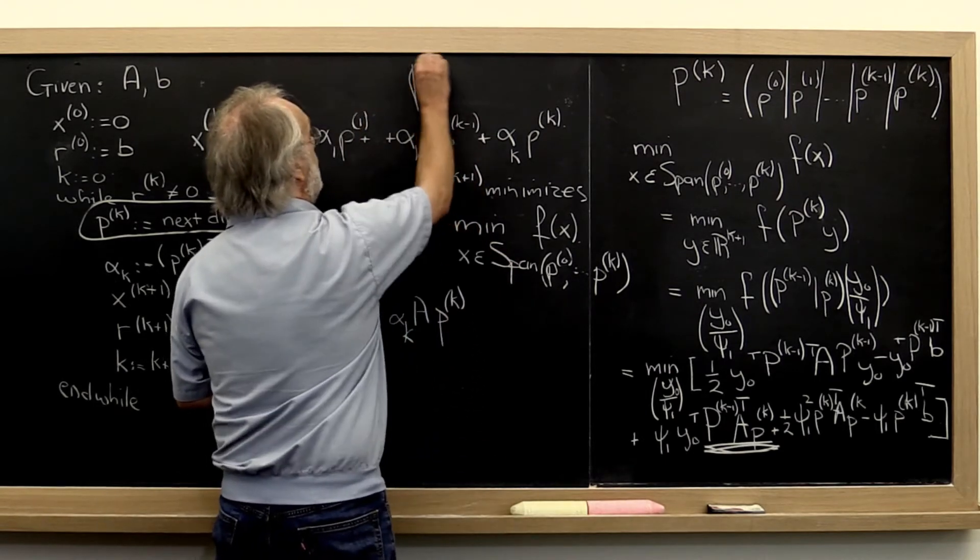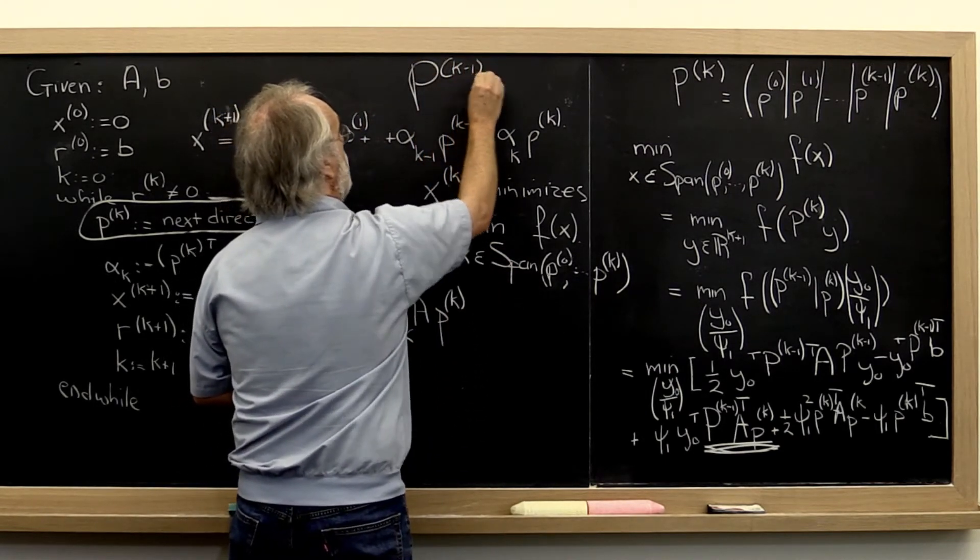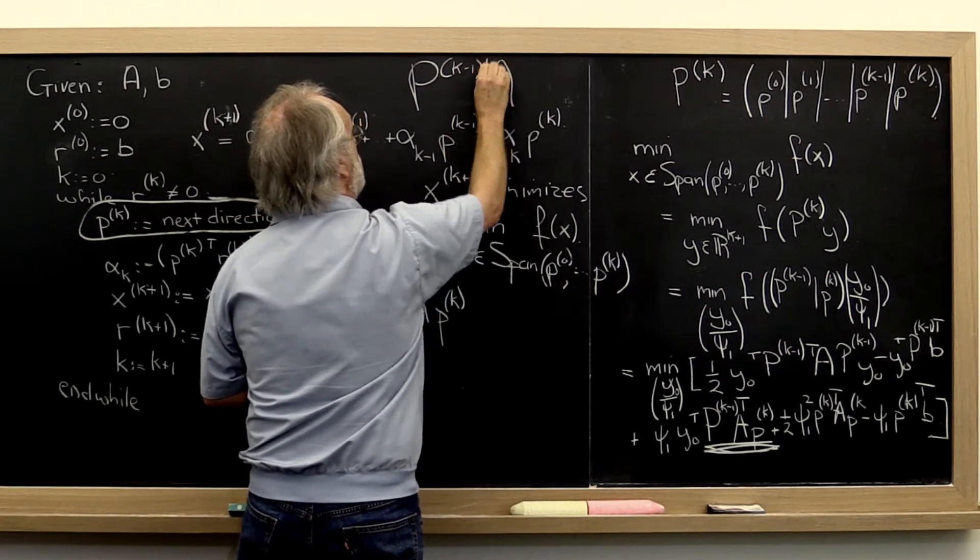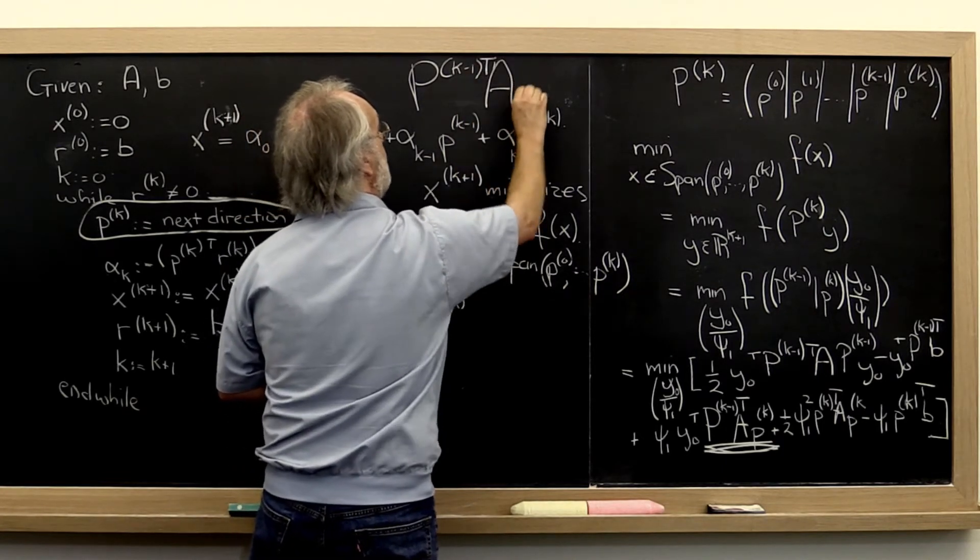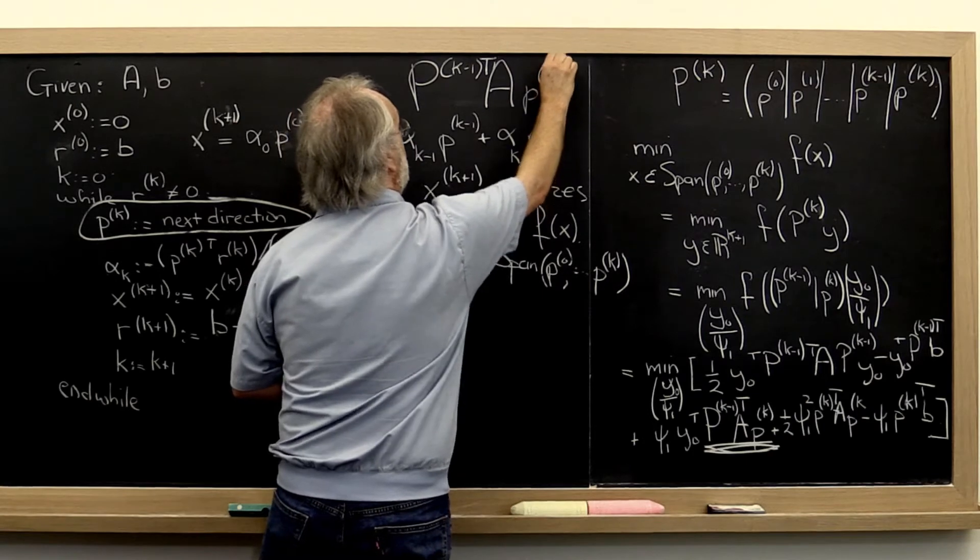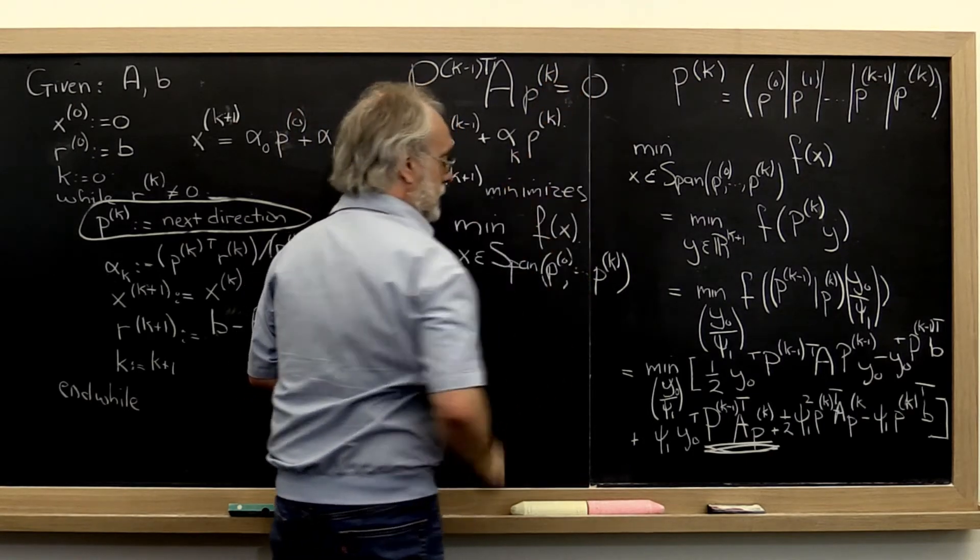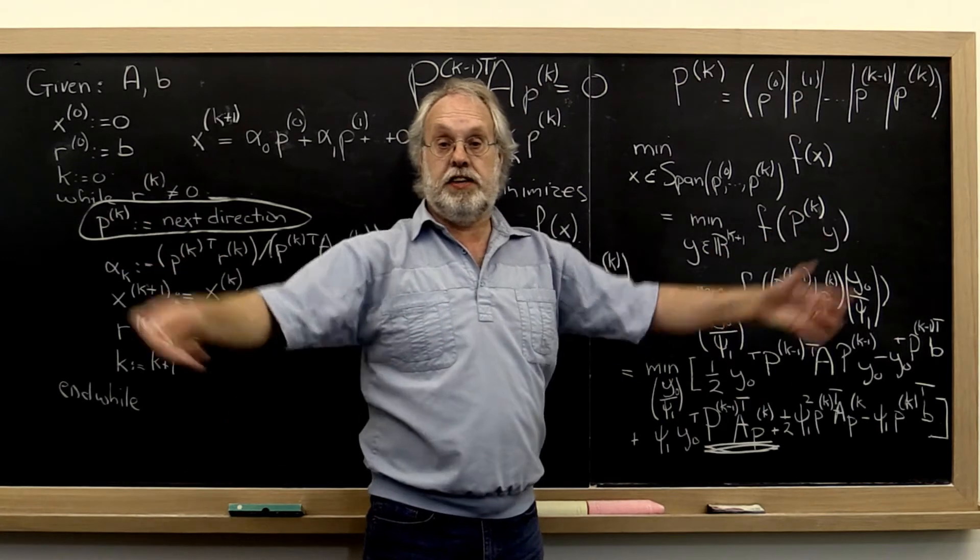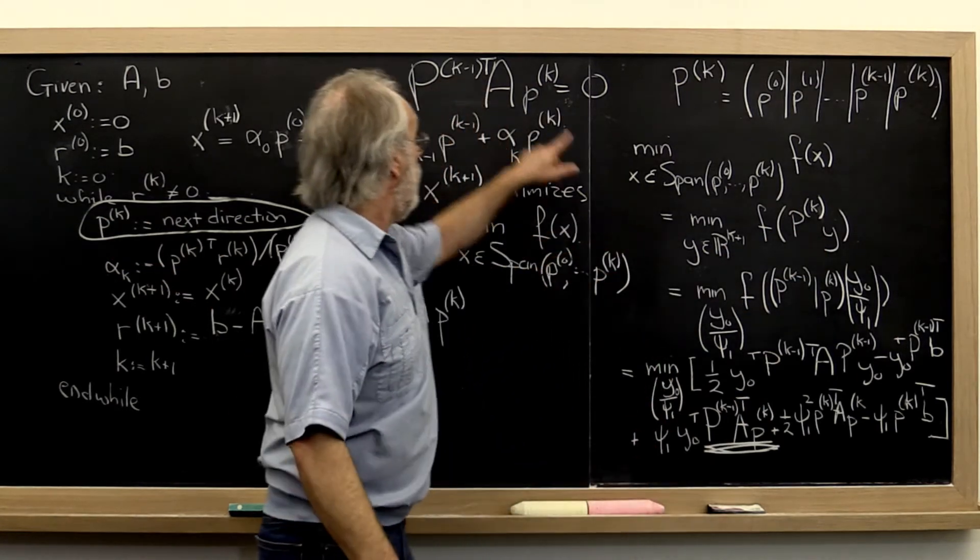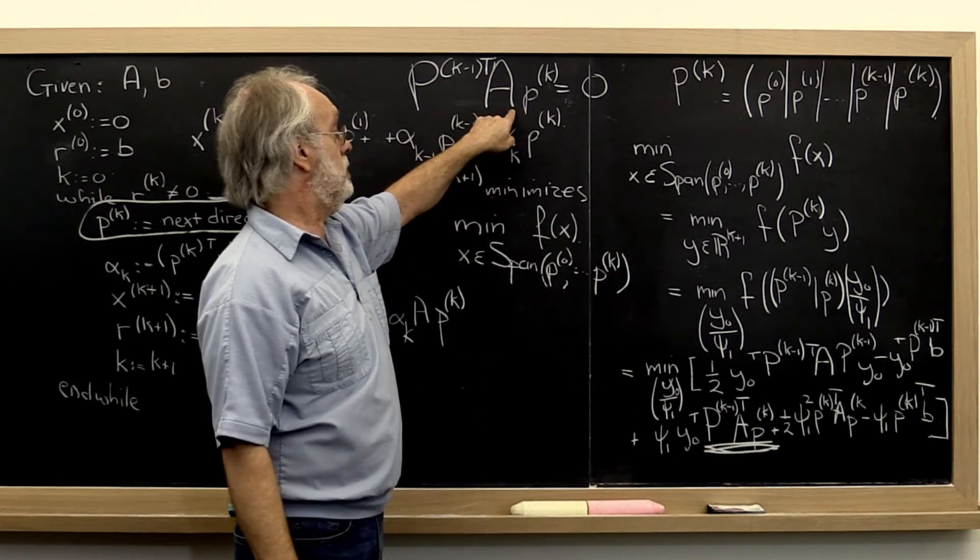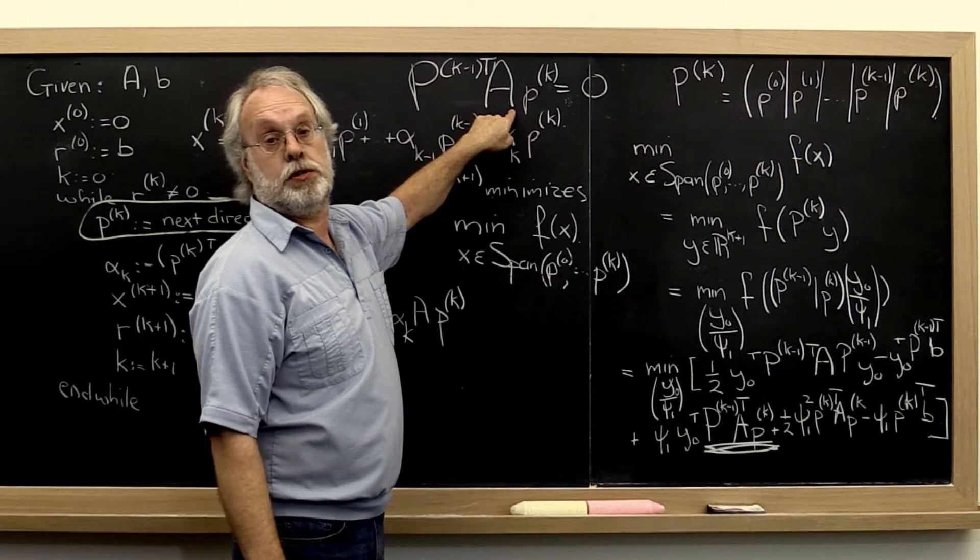If only p super k minus 1 times a transpose here times a times little pk were equal to zero, then we end up in this very nice situation. So here now we have a property that we want from our search directions.